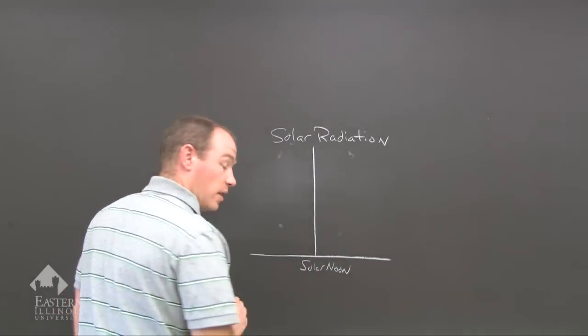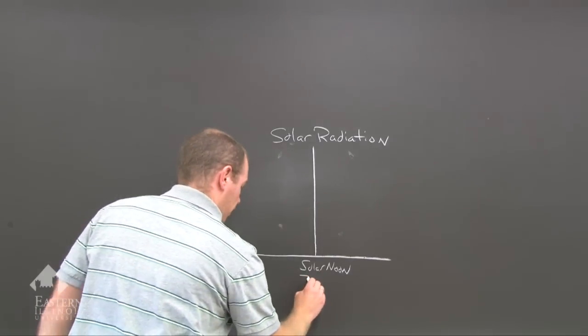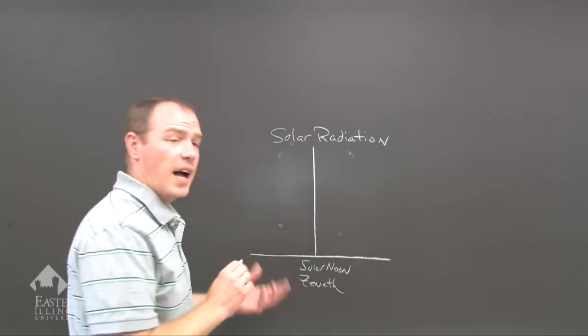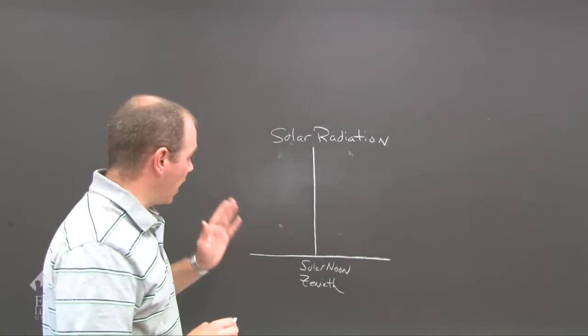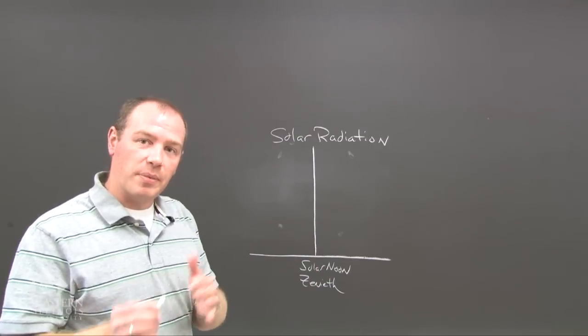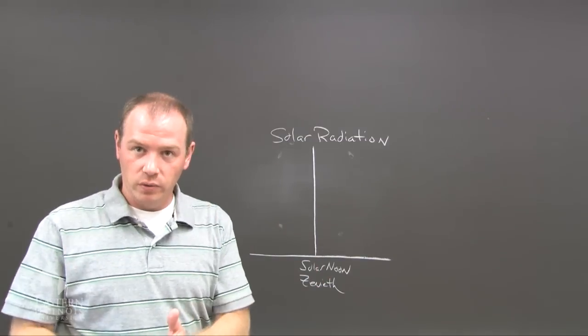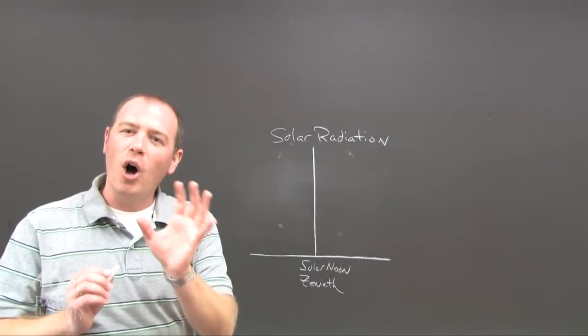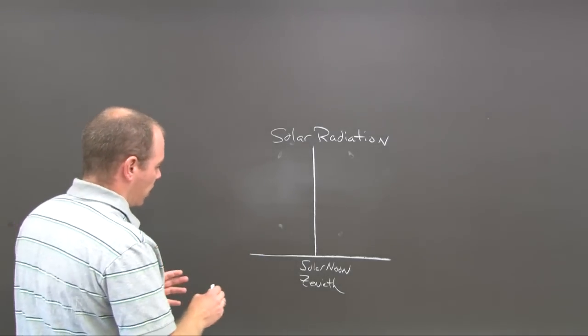solar noon, which is the sun's zenith. It's the high point of the sun at midday, solar noon. Solar noon doesn't typically happen at 12 noon, but it happens when the sun is directly overhead. It kind of has a pause to it.